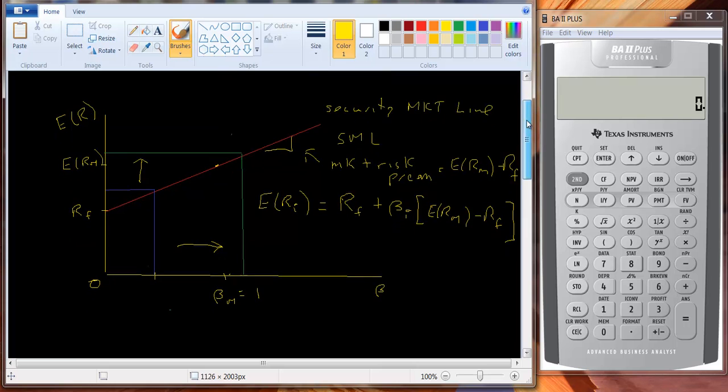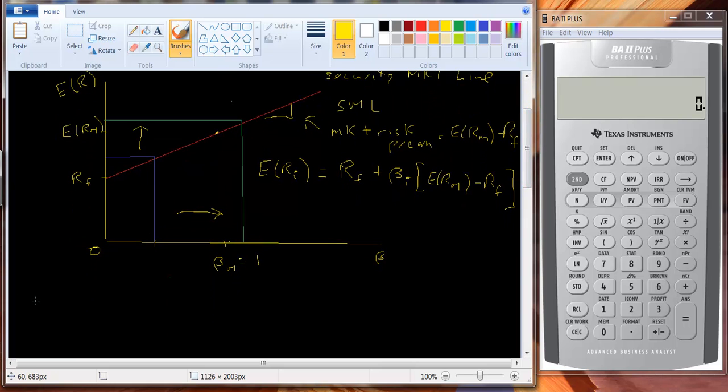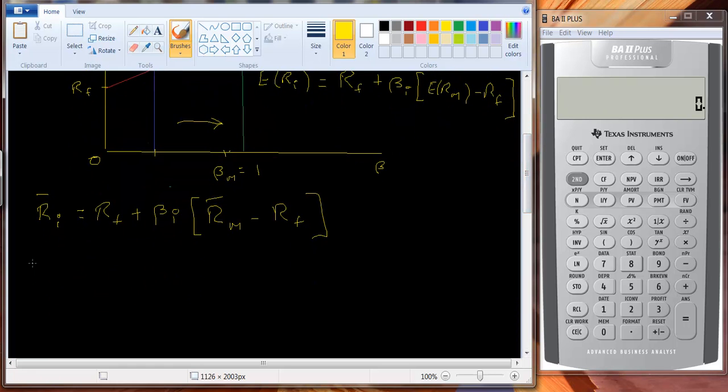Let's punch in a couple of numbers here. Rather than write E of R, I'm going to write R bar I for the average or expected return because it's a little bit easier to write. Risk-free rate plus beta I R bar M minus RF. And let's assume that the risk-free rate is 1% and the expected return of the market is 8%.